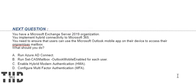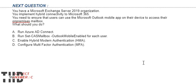You have a Microsoft Exchange Server 2019 organization. You implement hybrid connectivity to Microsoft 365. You need to ensure that users can use the Microsoft Outlook mobile app on their devices to access their on-premises mailbox. What should you do? Option A: Run Azure AD Connect. Option B: Run Set-CASMailbox with Outlook mobile enabled for each user. Option C: Enable hybrid modern authentication. Option D: Configure multi-factor authentication. The correct answer is Option C.